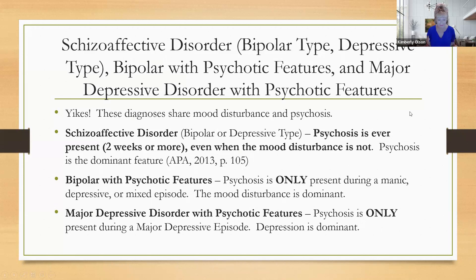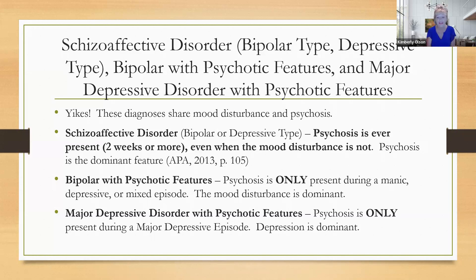There's a twist here — so many people get this wrong, and it's one of the questions I ask during interviews to assess diagnostic knowledge. These diagnoses share mood disturbance and psychosis: schizoaffective disorder (bipolar type and depressive type), bipolar with psychotic features, and major depression with psychotic features. In schizoaffective disorder, psychosis is ever-present — two weeks or more even when the mood disturbance isn't there. This person is psychotic whether or not they're having a depressive or manic episode. The psychosis is the dominant feature.